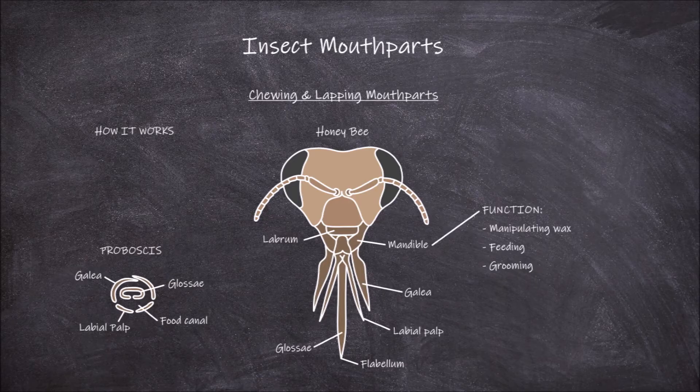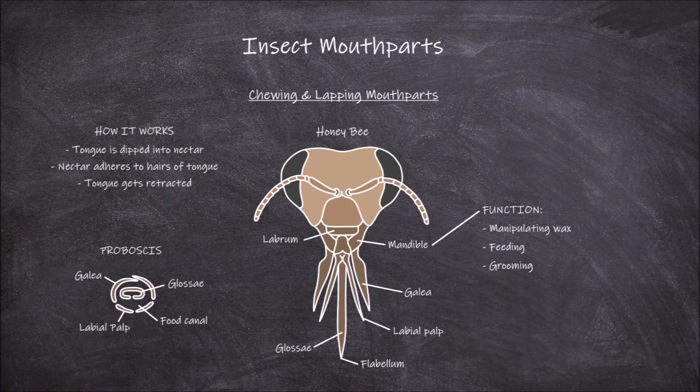How do these mouthparts work when feeding? In bees, this tongue is dipped into the nectar of a flower. The hairs that cover the tongue cause the nectar to adhere to it. The tongue then gets retracted, moving this nectar back up to the food canal.